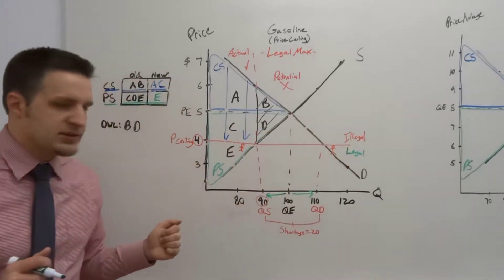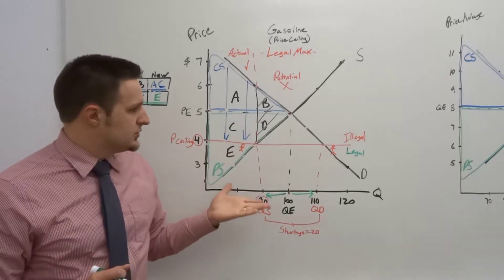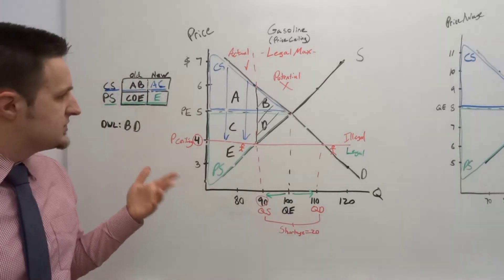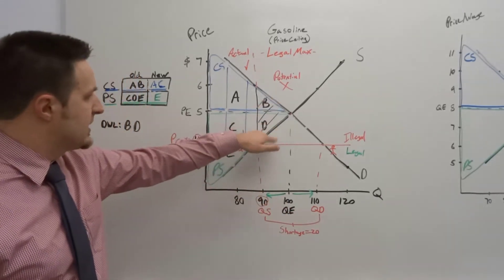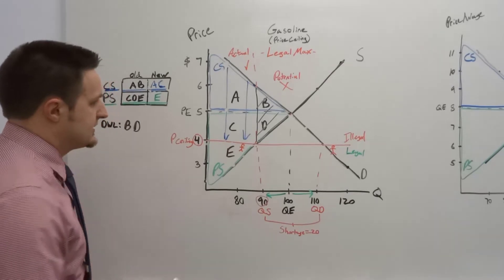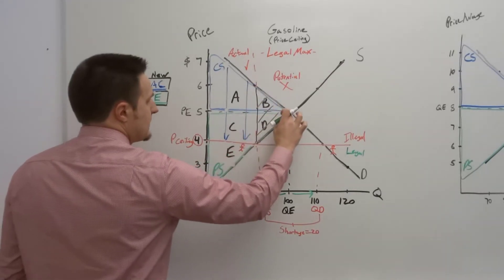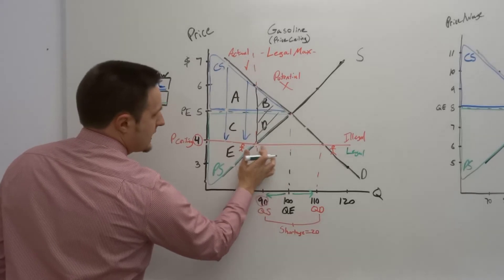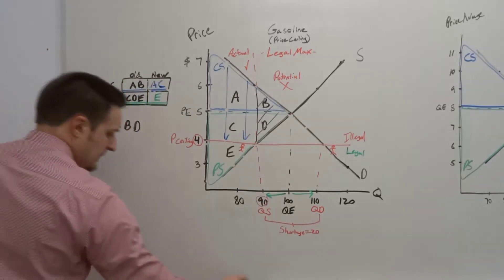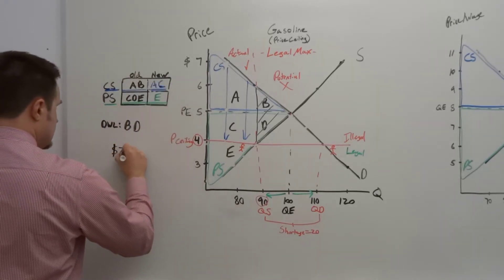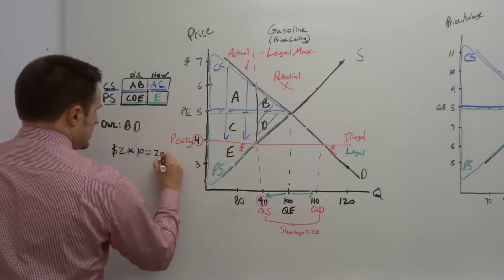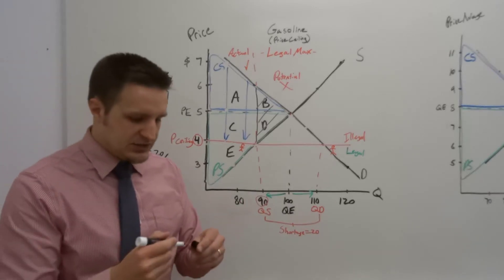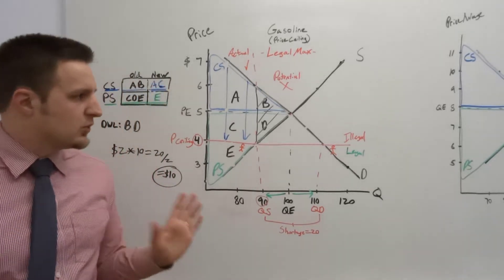Thus you have that gap between quantity supplied and quantity demanded. This concludes the basics of a supply and demand graph with a price ceiling. You may also be asked to calculate the area of deadweight loss. The deadweight loss triangle has a height of $2 and a width of 10. So 2 times 10 equals 20, divided by 2, gives you a deadweight loss area of $10.